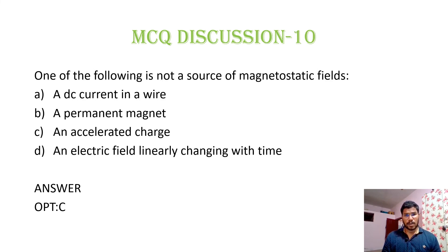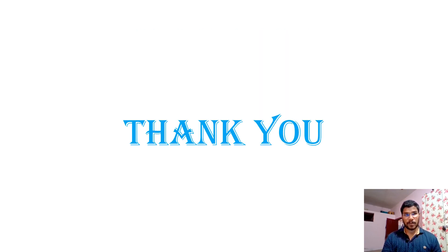MCQ 10: Which of the following is NOT a source of a magnetostatic field? A DC current in a wire produces a magnetostatic field (option A is a source). A permanent magnet also produces a magnetostatic field (option B is a source). An accelerated charge does NOT produce a magnetostatic field (option C is not a source). An electric field linearly changing with time also produces a magnetostatic field (option D is a source). Hence option C, an accelerated charge, is the answer. Thank you.